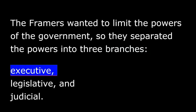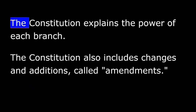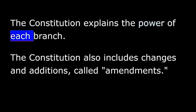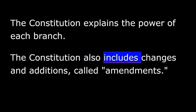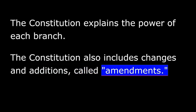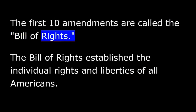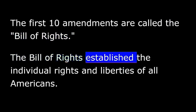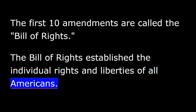The three branches are Executive, Legislative, and Judicial. The Constitution explains the power of each branch. The Constitution also includes changes and additions called amendments. The first ten amendments are called the Bill of Rights. The Bill of Rights established the individual rights and liberties of all Americans.